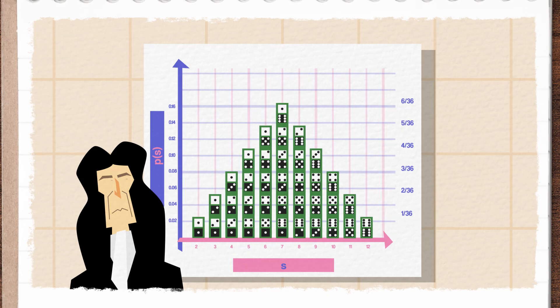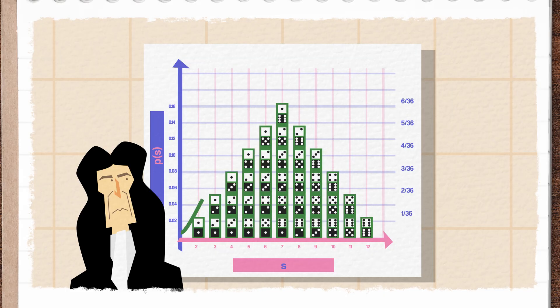In essence, if you looked at the histogram of events, like the sum of dice rolls after many rolls, the shape looked exactly like the graph plotted by a simple mathematical function — you guessed it — the normal distribution.